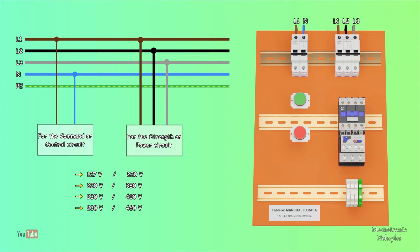Of these, and for this example, the power supply for the command or control circuit is single phase and for the power circuit it is three phase. It is necessary to take into account how much is the supply of the contactor coil, which is specified in the same device.